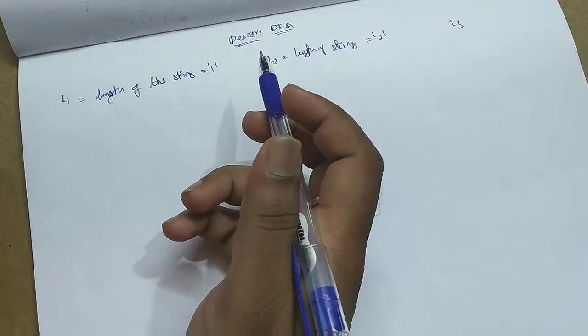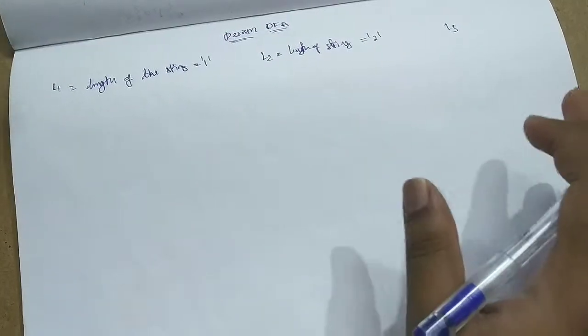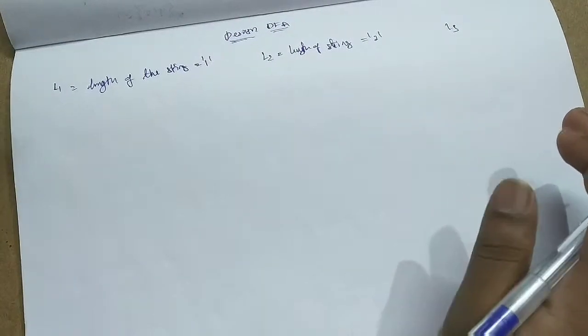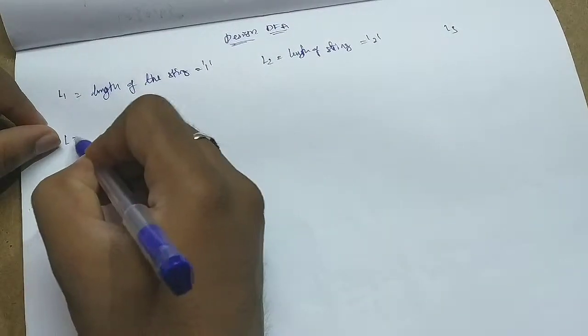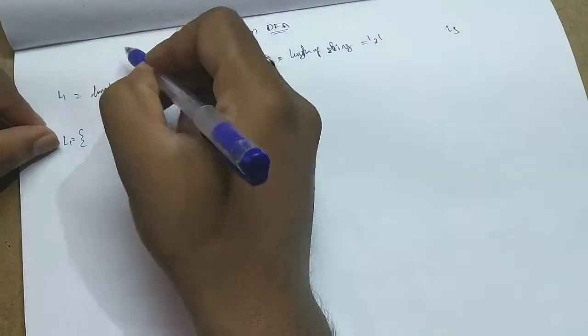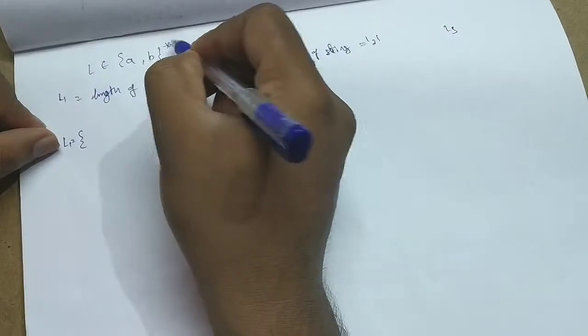How will you design DFA? In previous class only, I have told that if you are going to design a DFA, you have to construct the languages. What is construction of languages? You have to derive all the strings which are there in the languages. Our languages will belong to (a+b)*.